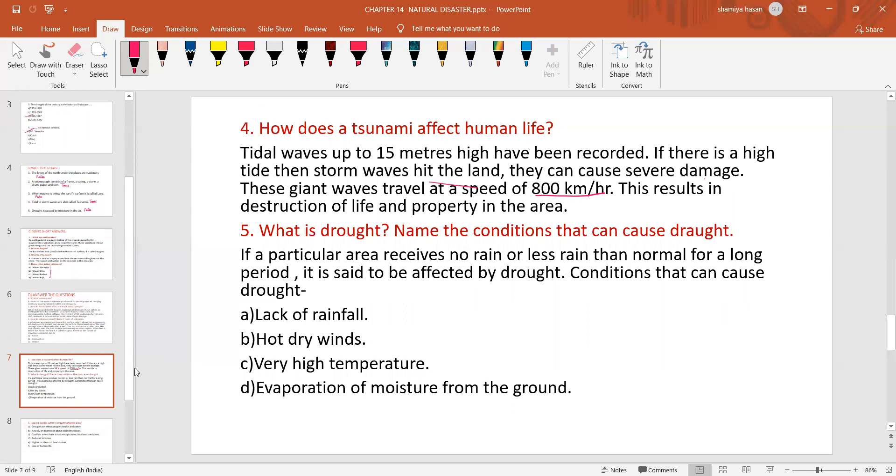What is drought? Name the conditions that can cause drought. If a particular area receives no rain or less rain than normal for a long period, it is said to be affected by drought. Conditions that can cause drought: lack of rainfall, hot dry winds, very high temperature, evaporation of moisture from the ground.